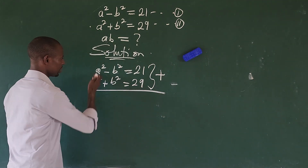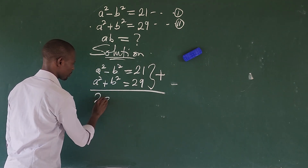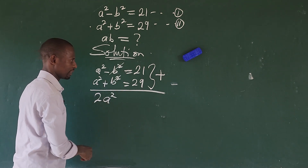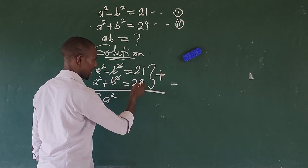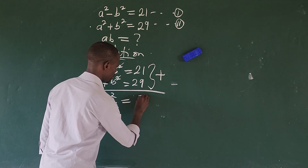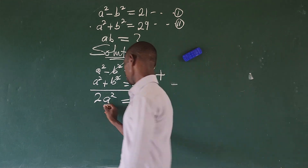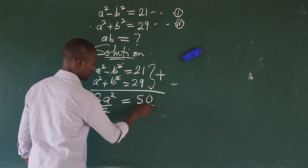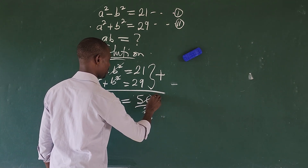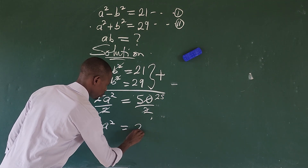Adding the two equations: a squared plus a squared gives us 2a squared, and the b squared terms cancel. 21 plus 29 gives us 50, so we have 2a squared equals 50. Dividing both sides by 2 gives us a squared equals 25.